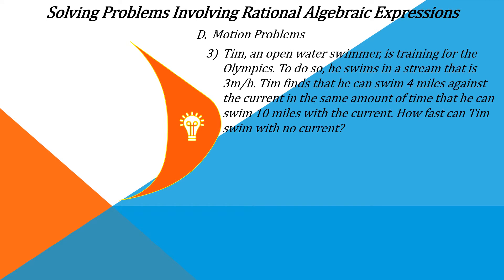Solving problems involving rational algebraic expressions — we are now in motion problems, example number 3. Tim, an open water swimmer, is training for the Olympics. He swims in a stream that is 3 miles per hour. Tim finds that he can swim 4 miles against the current in the same amount of time that he can swim 10 miles with the current. How fast can Tim swim with no current?